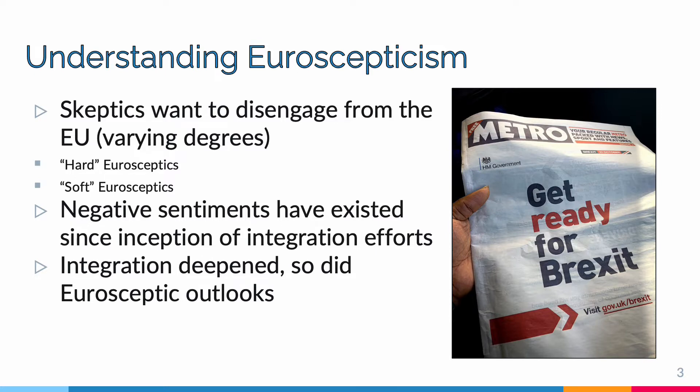Euroskeptic viewpoints have actually existed since the start of European integration following the Second World War, and even countries like the United Kingdom were not actually in favour of giving up their sovereign powers to an overarching body until the year 1973 — almost two decades after the first integration efforts were seen in Europe. Supranational organizations, such as the European Coal and Steel Community, provided the template for the European Economic Community, a free trade bloc created by the Treaty of Rome in 1957.